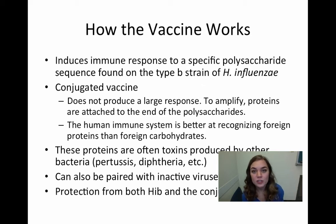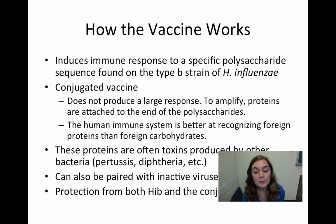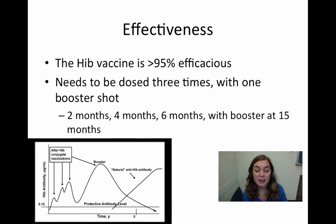The proteins used in this conjugated pair are usually exotoxins of other bacteria, such as pertussis and diphtheria, and it can even be inactive viruses like hepatitis B. So a conjugated vaccine of hepatitis B and Hib will provide immunity for both hepatitis B and Haemophilus influenzae type B. The effectiveness of this vaccine is actually over 95% efficacious, which is very, very good.